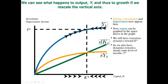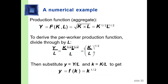We are going to talk about investment and depreciation. Depreciation refers to the replacement of equipment and machines in the company. We are going to discuss the production function — covered in Chapters 3, 4, and 5.